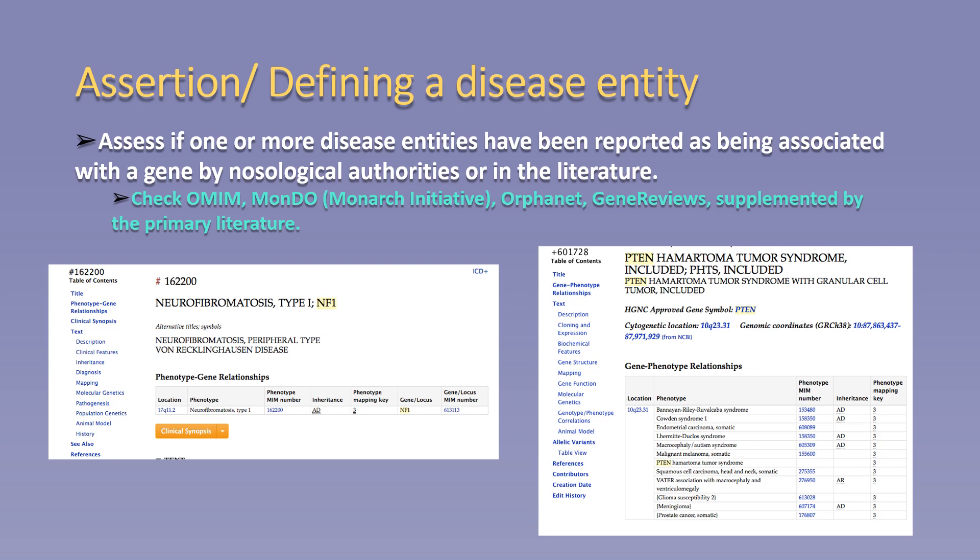On the left, we find that the gene NF1 is associated with a single disease entity per OMIM, being neurofibromatosis type 1. This example falls under our general principle that genes associated with a single entity should be curated only for that entity and not split unless the other criteria are met. Therefore, we would encourage the curation of NF1 for neurofibromatosis type 1, as opposed to the curation of NF1 for a phenotypic feature associated with the full syndrome, such as Lisch nodules.